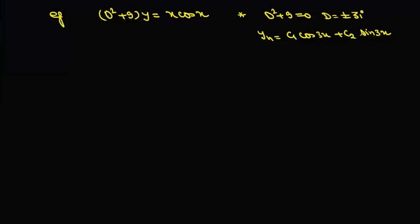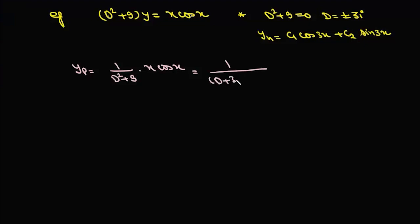Now we need to find the particular integral. We will write yp as 1/(d² + 9) times x·cos(x). We can factor d² + 9 as 1/[(d + 3i)(d − 3i)] times x, and we write cos(x) in terms of exponential functions as (e^(ix) + e^(−ix)) / 2.